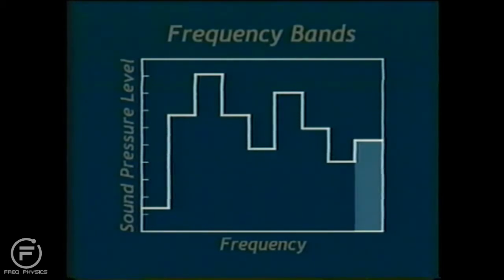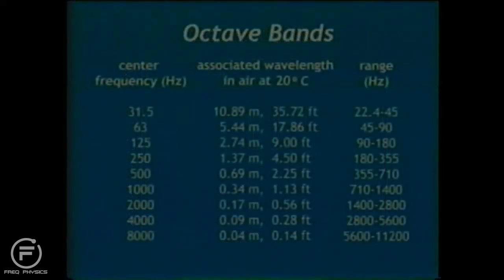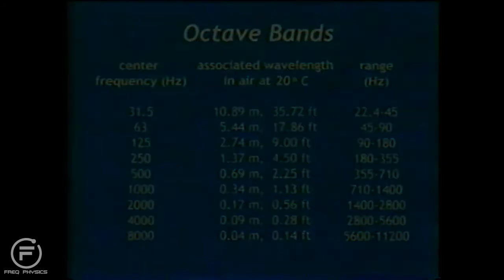For octave band analysis, the entire frequency spectrum is divided into one octave bands. A list of these bands is shown in the table. The center frequency of each band is one octave higher than the previous band. Notice the center frequencies associated wavelengths. For the frequency of 31.5 hertz, the wavelength in air is 10.89 meters, or 35.72 feet. And for the frequency of 8,000 hertz, the wavelength is 0.04 meters, or 0.14 feet.